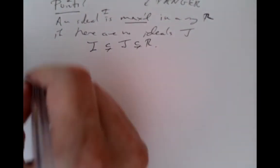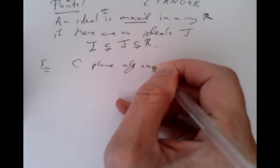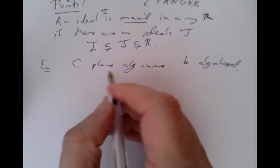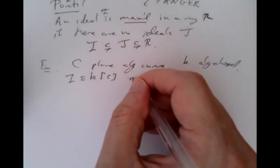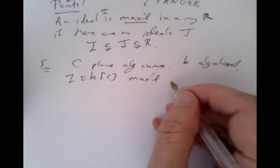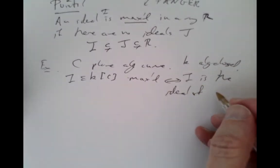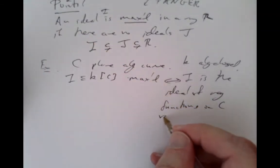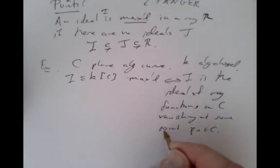A maximal ideal is the analog of the equations of a point. If we think of a ring as regular functions on some geometric object, the bigger the ideal — the more equations imposed — the smaller the geometric object satisfying them. If I is maximal, there's no larger collection of non-trivial equations, so we're down to the smallest possible set of solutions: something like a point. One can check that for a plane algebraic curve C over an algebraically closed field, I is maximal in the coordinate ring exactly when I is the ideal of regular functions vanishing at some point p0 on C.